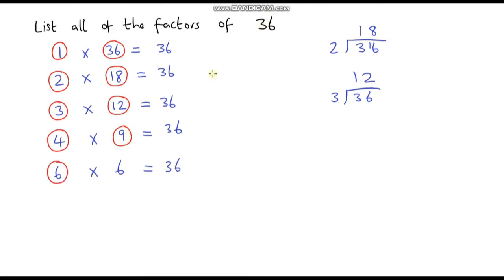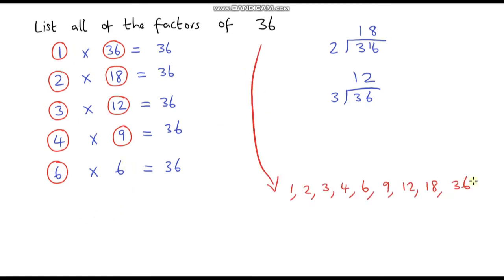Now are there any more factors of 36? Well no there are not — 6 times 6 is the last one because we're back round to where we started. So we just list all of these out. The factors of 36 are: 1, 2, 3, 4, 6, 9, 12, 18, and 36.